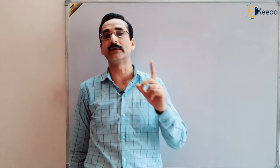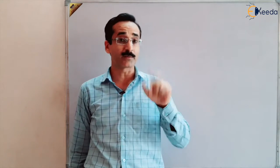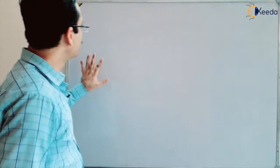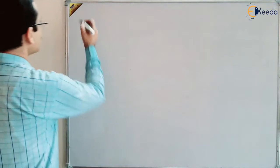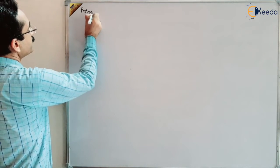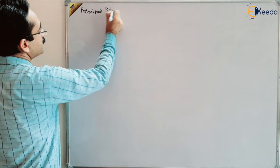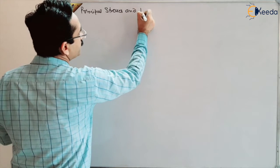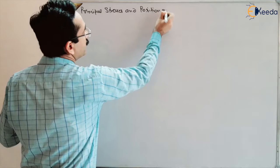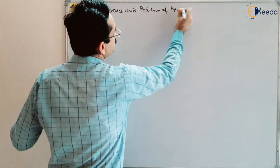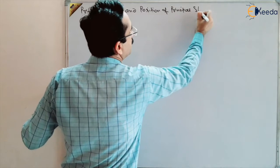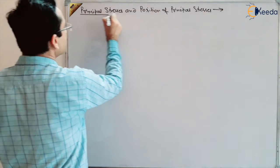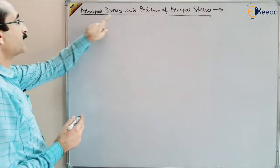Tau, the shear stress, will be equal to zero at the planes of principal stresses. The planes where principal stresses are acting are called principal planes. Now we want to discuss the principal stresses and the planes of principal stresses — their position. Position means angle: at what angle the principal stresses are acting.